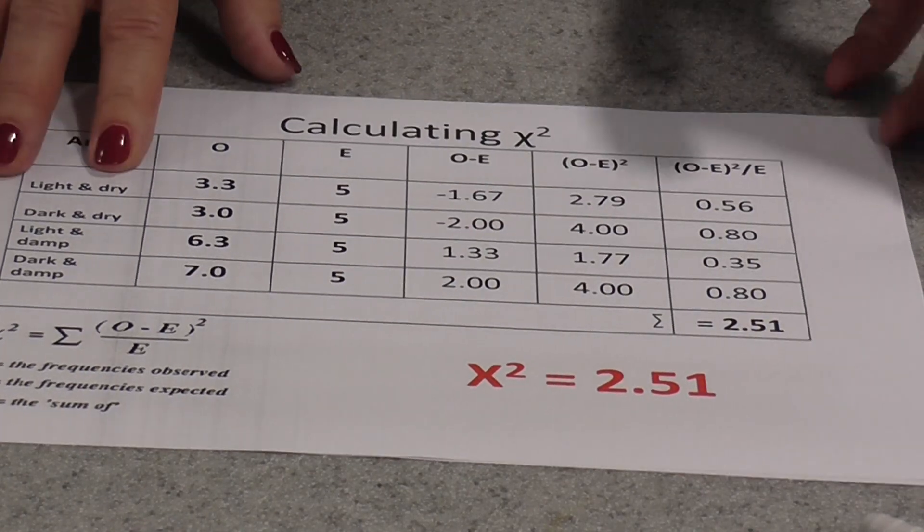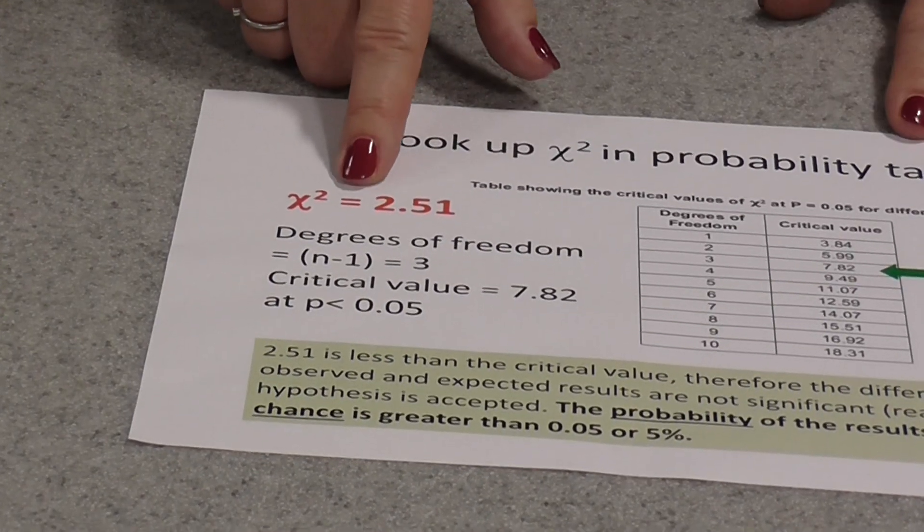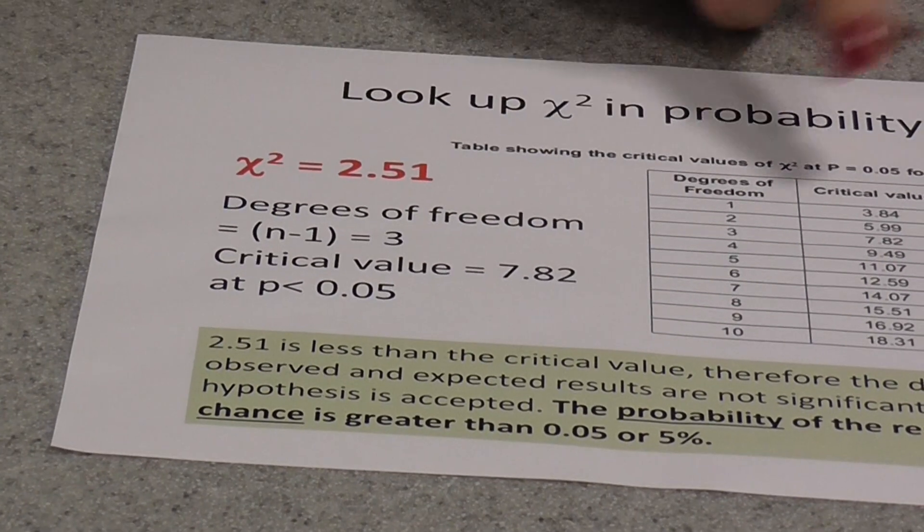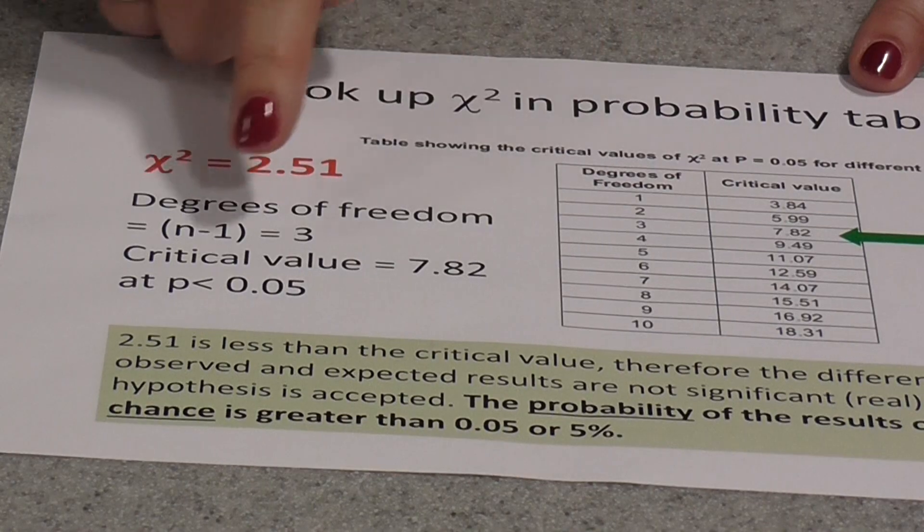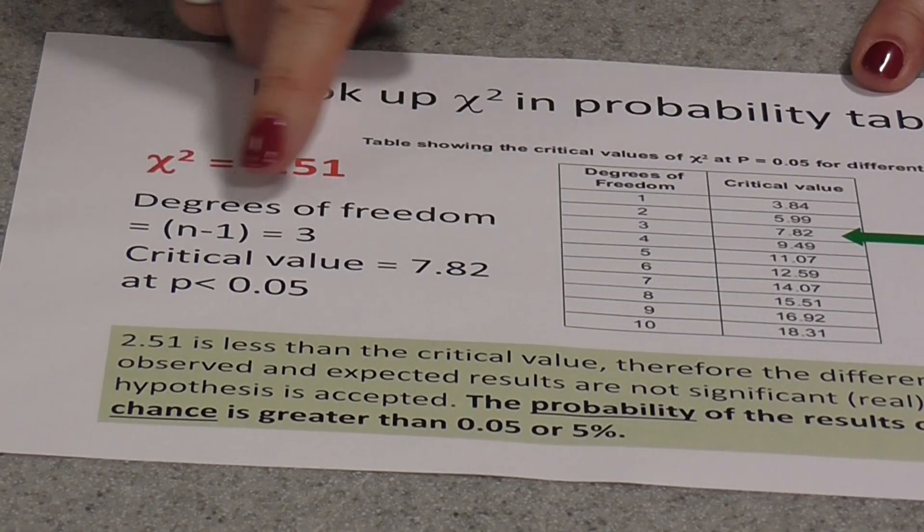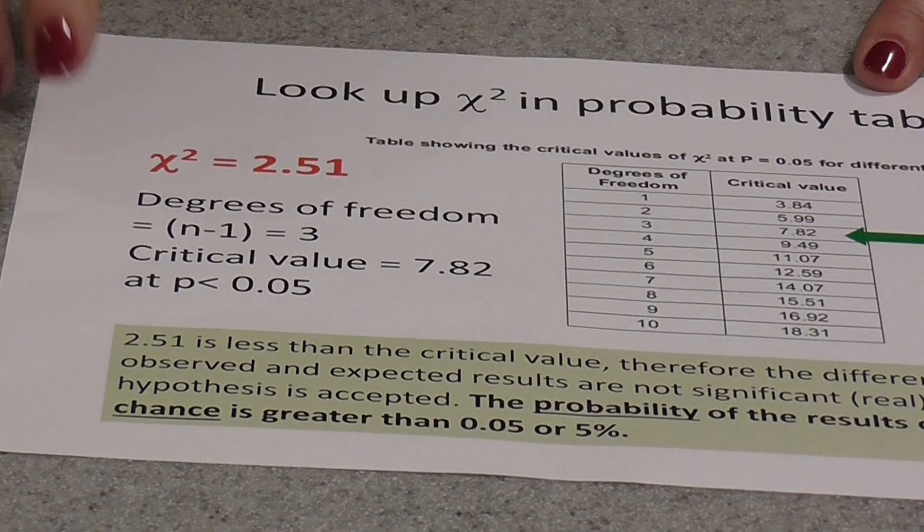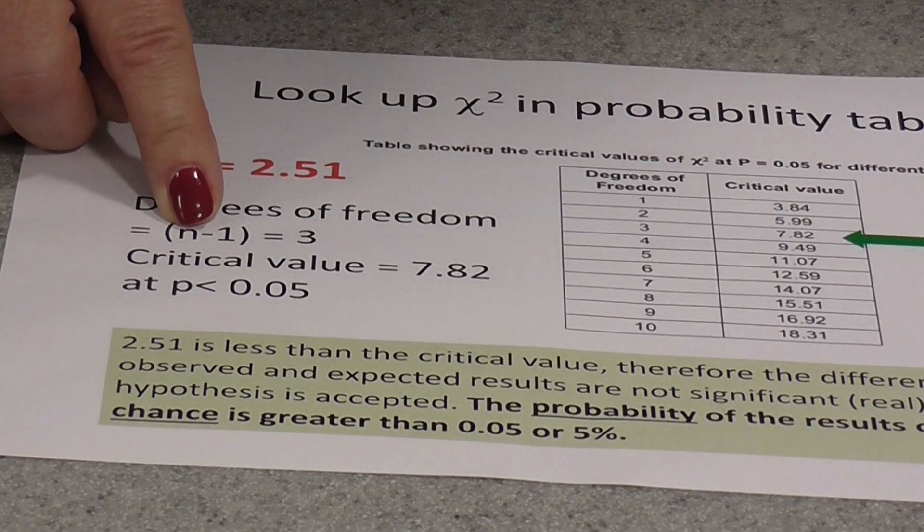Now on its own, that value has no meaning. So what we have to do next is look up our chi-squared result on a probability table. In order to do this, we have to calculate the number of degrees of freedom in this investigation, which is always the number of categories minus one.